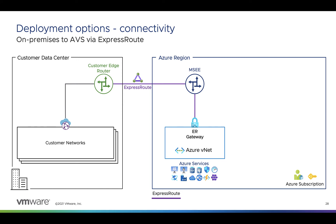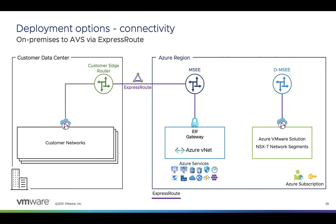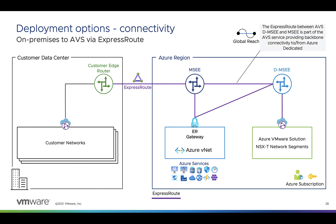Most enterprise customers will have that existing ExpressRoute circuit between on-prem and Azure. When we deploy our AVS private cloud, it'll be connected to the dedicated Microsoft Enterprise Edge. We can then connect that to an ExpressRoute gateway in our existing Azure VNet to allow resources within that VNet to communicate with AVS. At this point, the customer network can communicate with the Azure VNet, and the Azure VNet can connect to AVS, but the customer network cannot connect directly to AVS yet. For that, we need to configure ExpressRoute Global Reach to peer the ExpressRoute circuit supporting the customer connection to the ExpressRoute circuit supporting AVS.